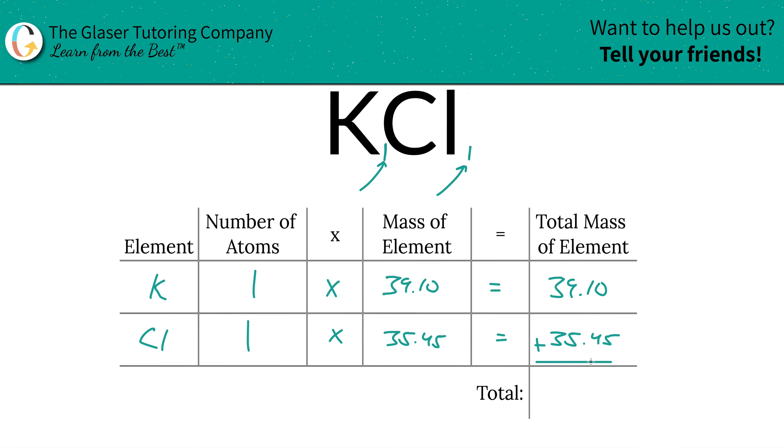Anyway, add this column together and you will arrive at the total mass of the entire compound. So 74.55. And there we have it. So that now represents the total mass of the entire compound. That was the first step.